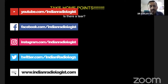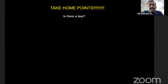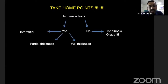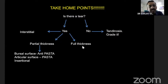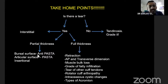To conclude — take-home points for what to report in a rotator cuff evaluation. First, identify if there is a tear. If not, call it tendinosis and grade it as mild, moderate, or severe. If there is a tear, identify whether it is interstitial, partial thickness, or full thickness. For partial thickness tears — including bursal surface (anti-PASTA), articular surface (PASTA), and insertional tears — measure the percentage of tendon thickness involved. For full thickness tears: measure retraction, the AP transverse dimension of the tear, identify muscle bulk loss, grade fatty infiltration, look for tears of other cuff tendons, note rotator cuff arthropathy, and identify causative factors such as acromion type or other external impingement factors.